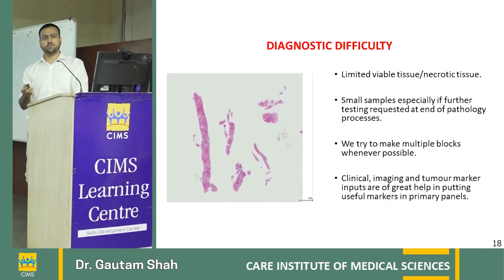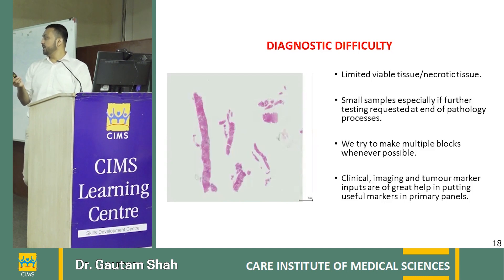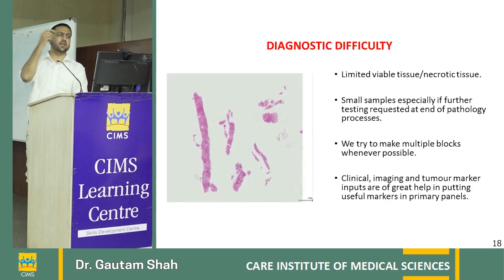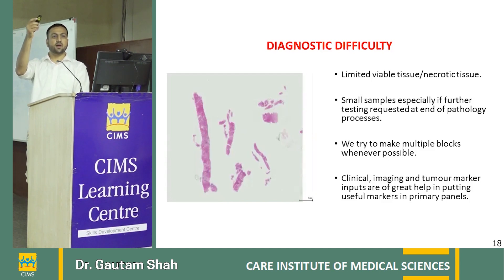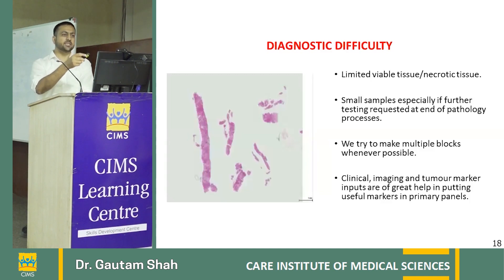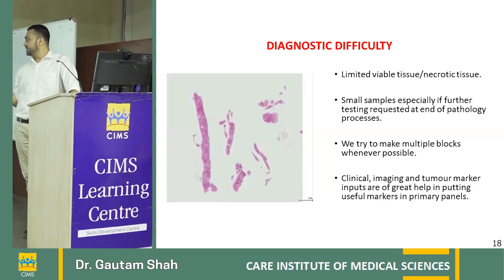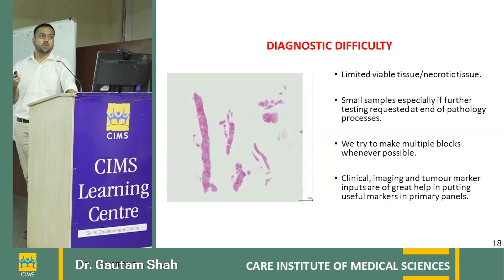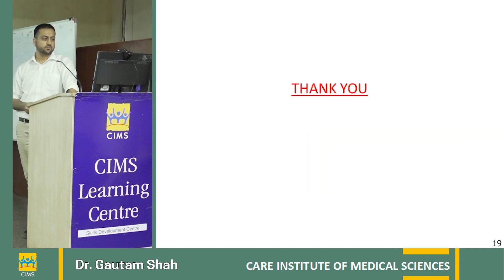The take-home message is that immunohistochemistry as a single test cannot help much at the diagnostic level. Clinical imaging and tumor marker inputs are of great help when selecting useful markers for the primary panel. There is no need to run an entire panel if, for example, you are suspecting lymphoma, or there is a clear liver mass with high AFP and morphology showing poorly differentiated hepatocellular carcinoma — in that case, wasting markers on a colonic panel or CK7/CK20 is unnecessary. Always correlate with clinical and imaging findings.